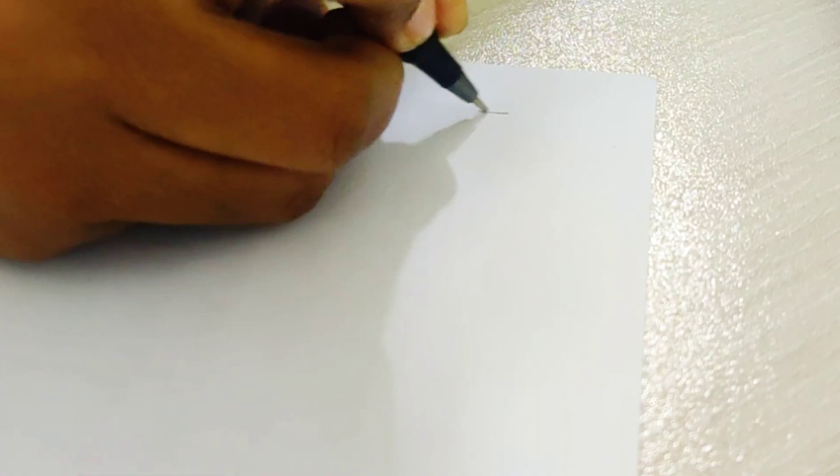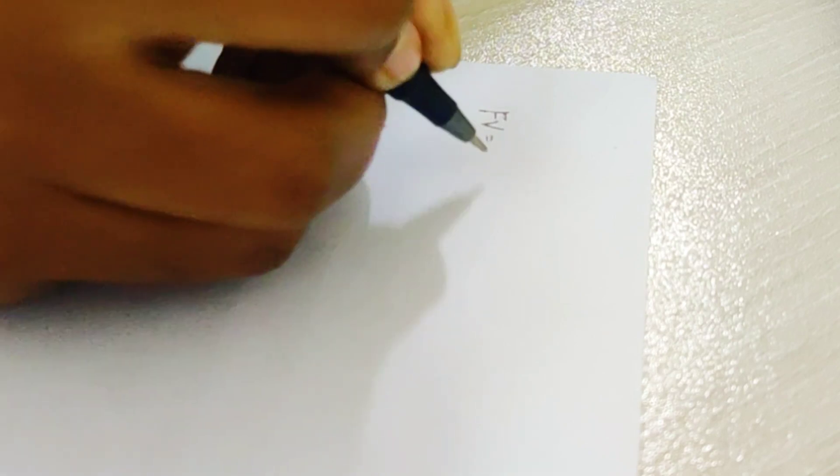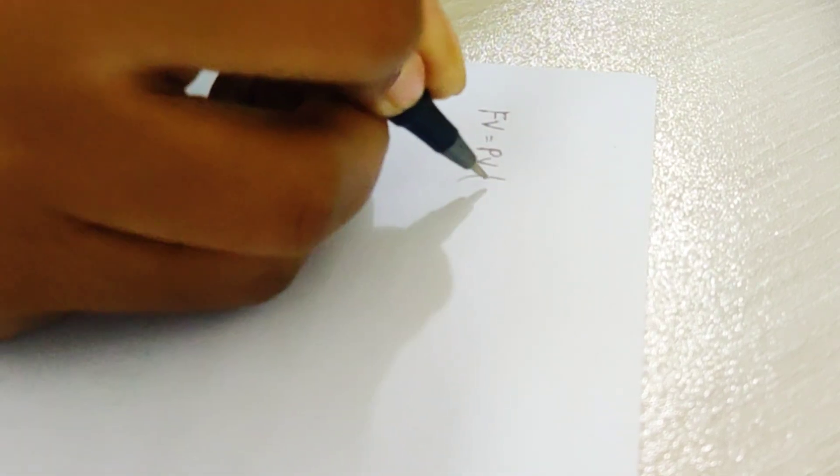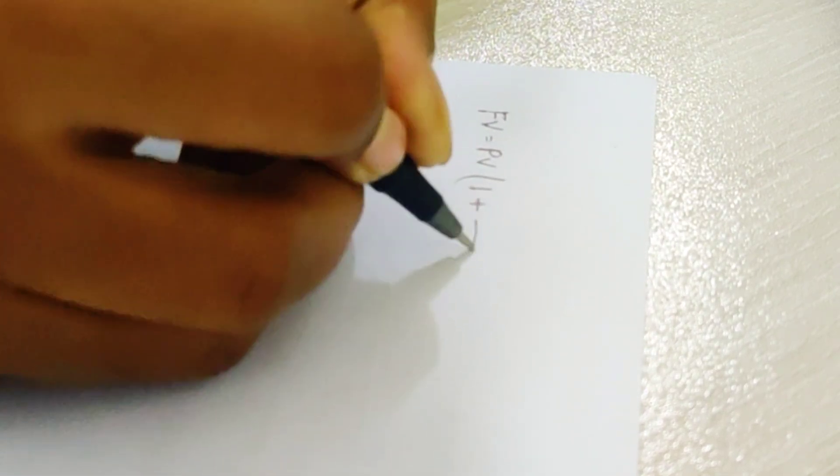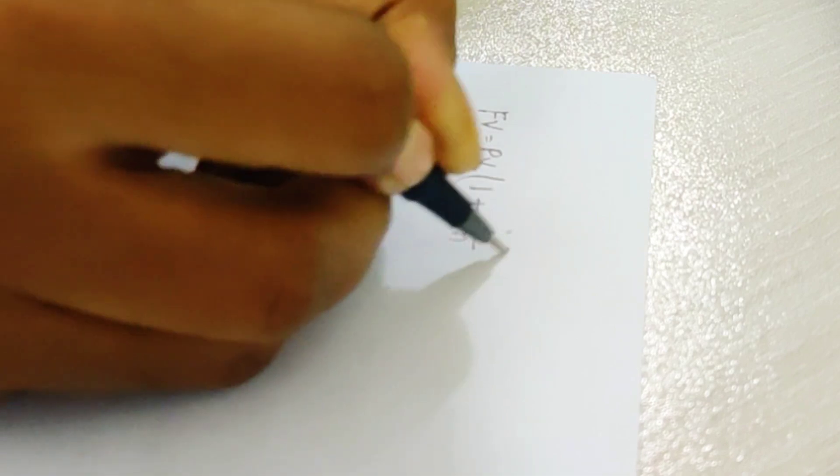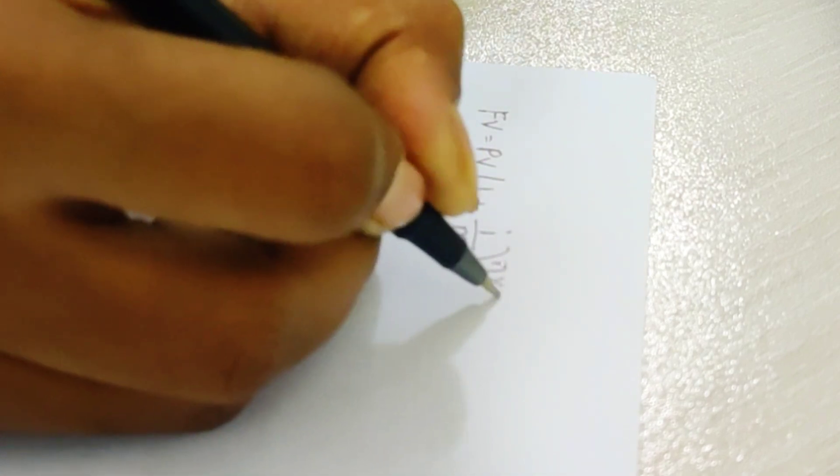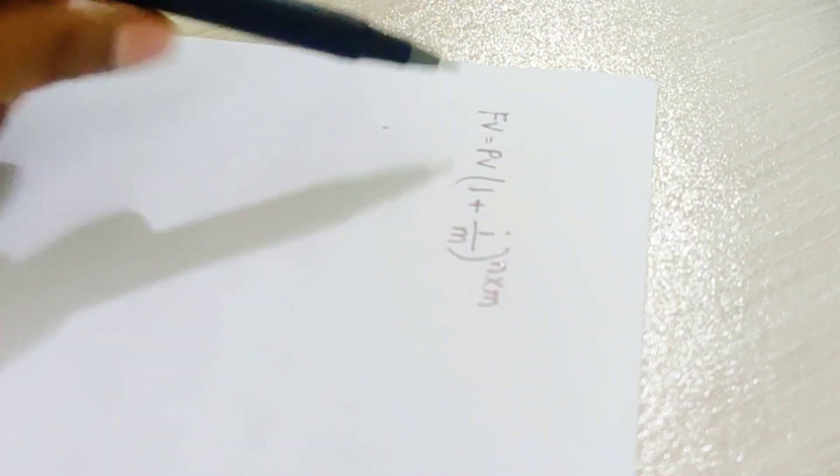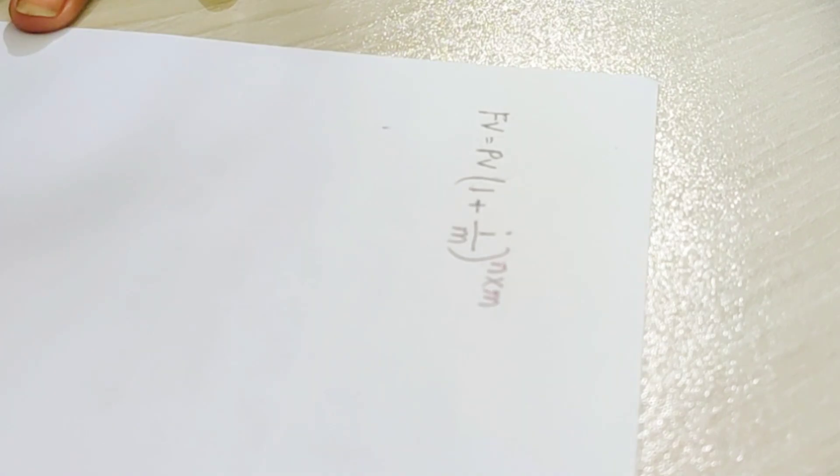So then we are going to apply this formula. The future value FV is equals to PV times 1 plus i divided by m, raised to the power n times m. Now, what is the first thing we have to know about the first thing?